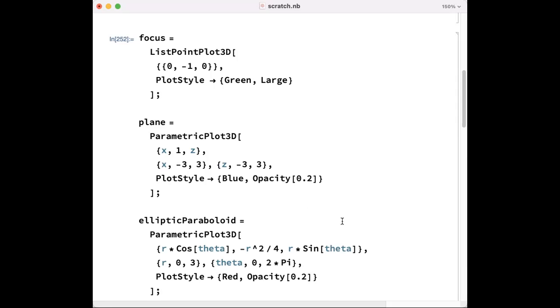Now let's plot an elliptic paraboloid. And I'm going to do this with polar coordinates or with polar coordinates extended into space. In other words, in the X and Z slots, I'll draw a circle with R cosine theta and R sine theta. And then the Y slot, I'll take any point on that circle and make it minus R squared divided by 4.